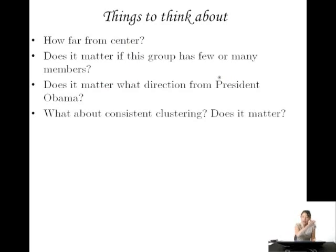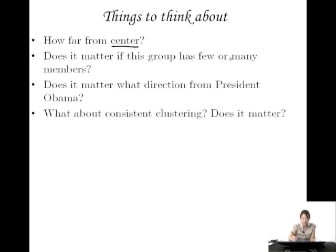So those are some different ways you could think about variability — all ways of sticking a number on this concept. But you might come up with different numbers and different definitions for what it means to be spread out versus very close. Some things to think about: should we measure how far they are from the center or from each other? Center is going to be an important concept — should we measure from the median, the mode, or the mean? Does it matter if the group has few or many members? Does it matter what direction — right, left, up, down? And what about consistent clustering?